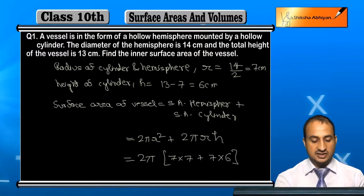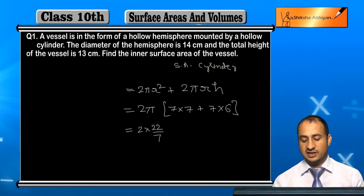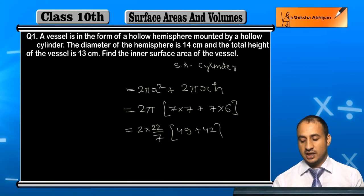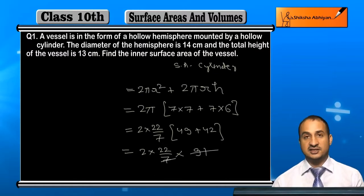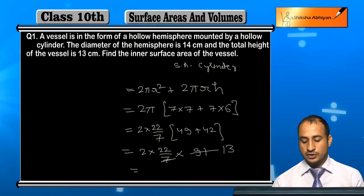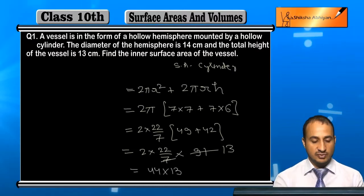And how much is this? This will come out to be 2 into 22/7. This will come out to be 49, and this is 42. Now add it: 2 into 22/7 into 49 plus 42, which is 91. If this 7 cancels out here, then you get 2 into 22 into 13.